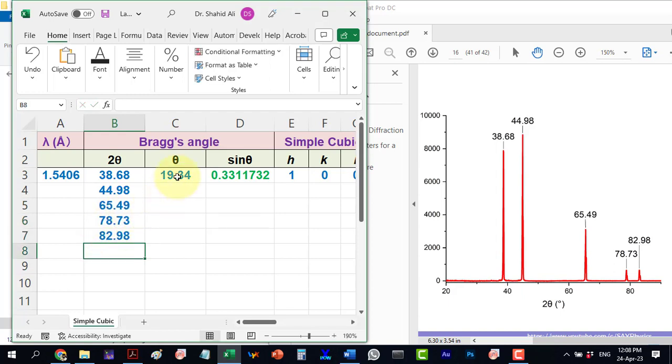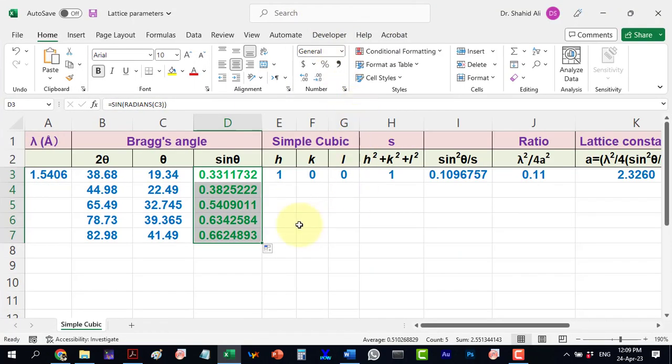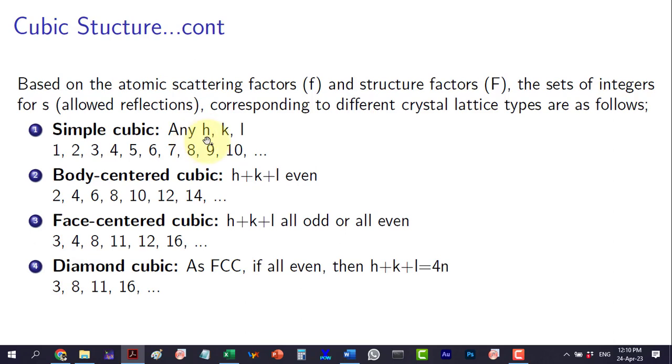Next, we calculate the values of θ and sin θ. Then we move here and now we will put different sets of integers and we will check which of the set is giving the constant value for sin²θ / s. Let's first try the set of integers for the simple cubic structure.